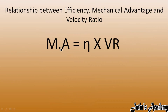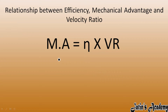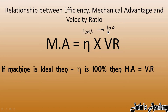Rearranging, mechanical advantage equals efficiency into velocity ratio. Now here are some important points. For an ideal machine, efficiency is 100%, which means efficiency equals 1. When efficiency is 1, mechanical advantage and velocity ratio are equal.